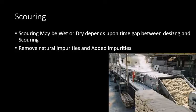Scouring में जो natural impurities remove होती हैं वे हैं: fat, wax, pectic substance, protein, seed coat, और oil stain। ये सभी natural impurities होती हैं जिन्हें scouring process में remove किया जाता है।